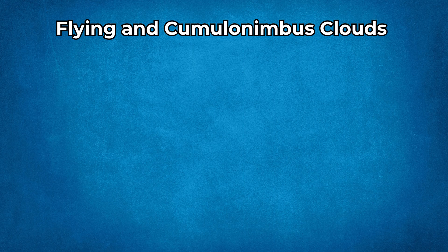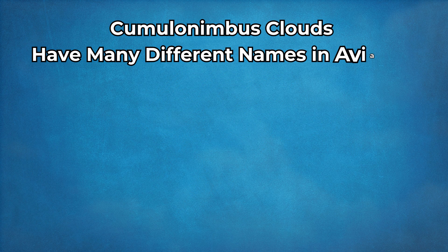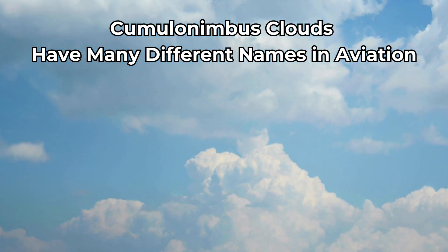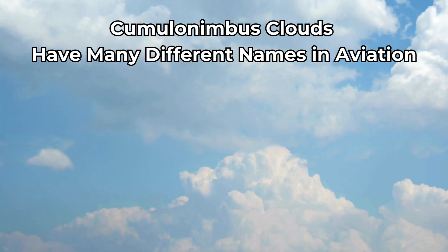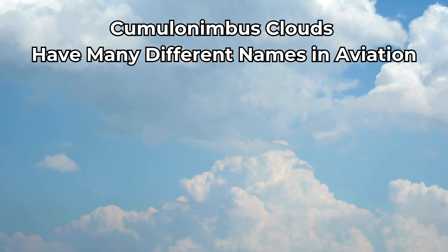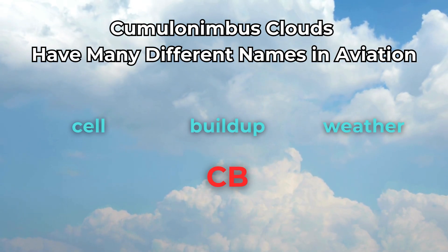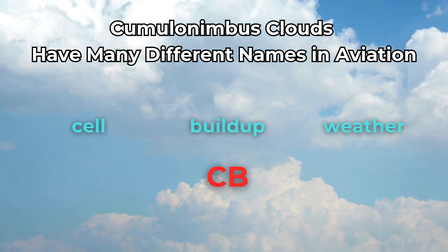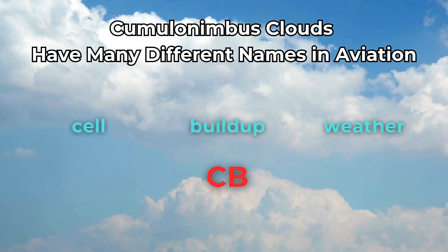Why is this information about cumulonimbus clouds so important? In basic terms, they are really dangerous to airplanes. Here are nine essential things you need to know. First, cumulonimbus clouds have many different names in aviation — you'll rarely hear the full name. Aviators use terms such as a buildup, a cell, weather, and CB. CB is a term taken directly from meteorological information provided to pilots. Think carefully about the implications if you see CB anywhere on your weather information or forecast.